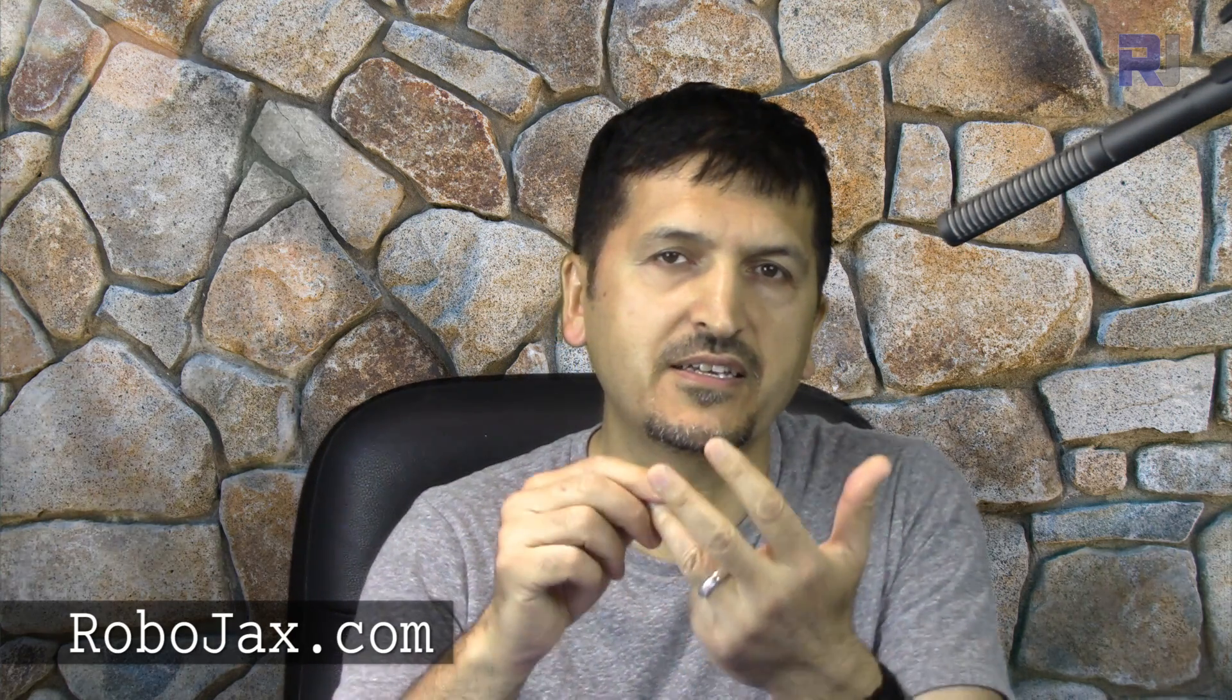Hi, welcome to Robojax. In this video I'm going to show you how you can turn the LED on by touching and by removing your finger the LED will go off with very simple components. You will just need two resistors, a transistor, and an LED. You don't need any other module or anything.